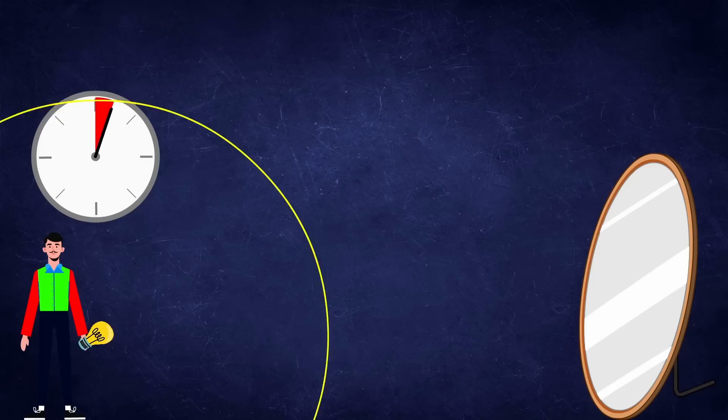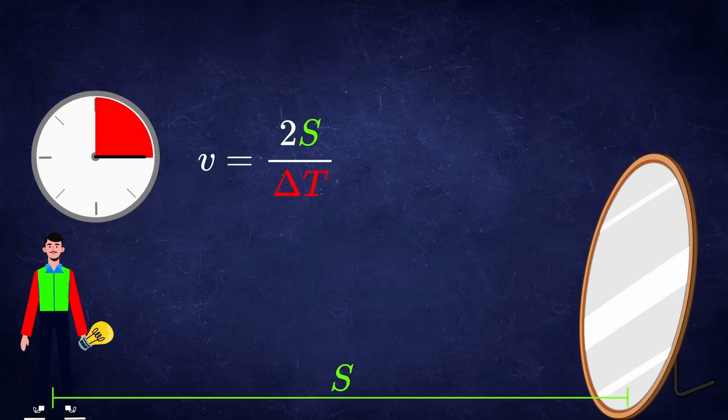The speed of light was never measured in only one direction. That is a very well-known fact. The only way to measure the speed of light is to take an average over a round trip.